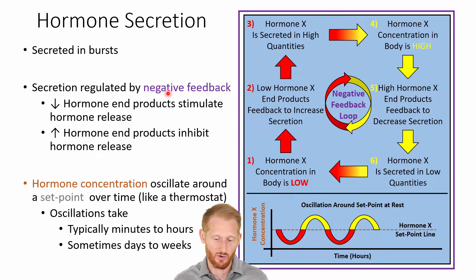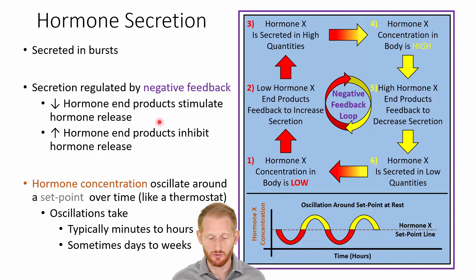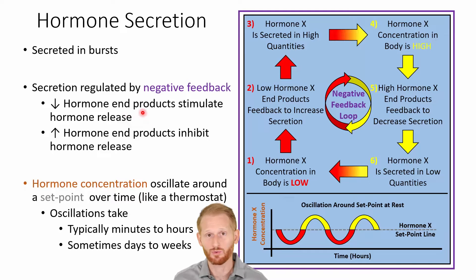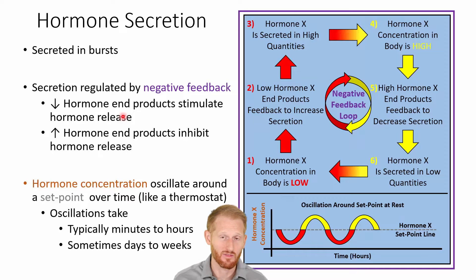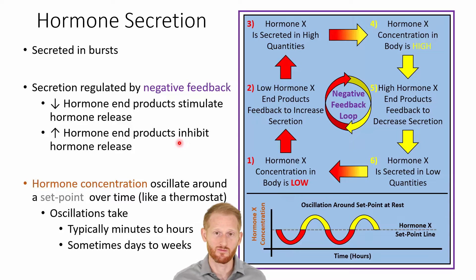We typically regulate hormones with negative feedback loops. Essentially, a low amount of the end product of a hormone stimulates the hormone's release to get more of that end product. Conversely, a high amount of the hormone's end product inhibits the release of more hormone, lowering the amount that gets into the bloodstream.